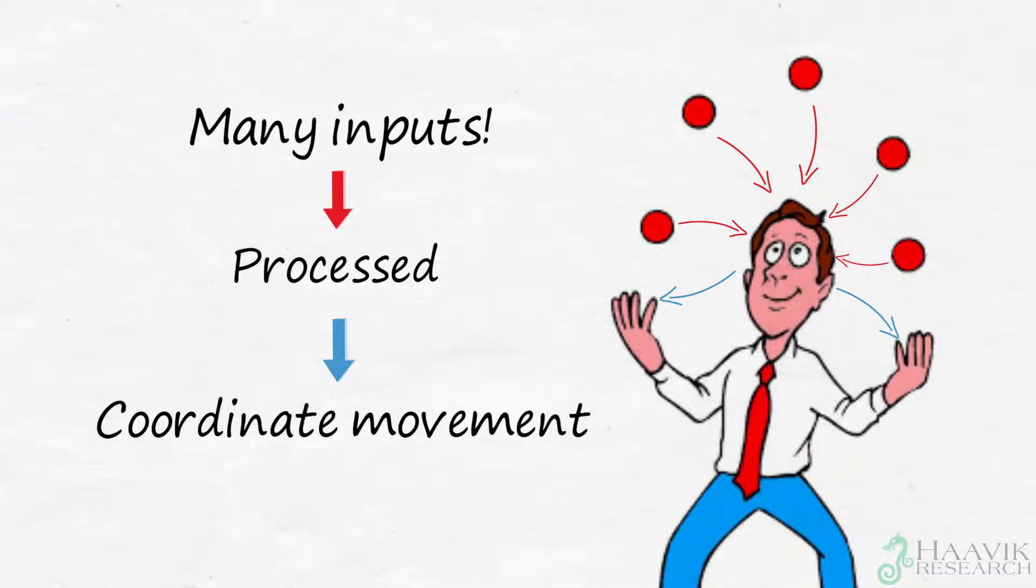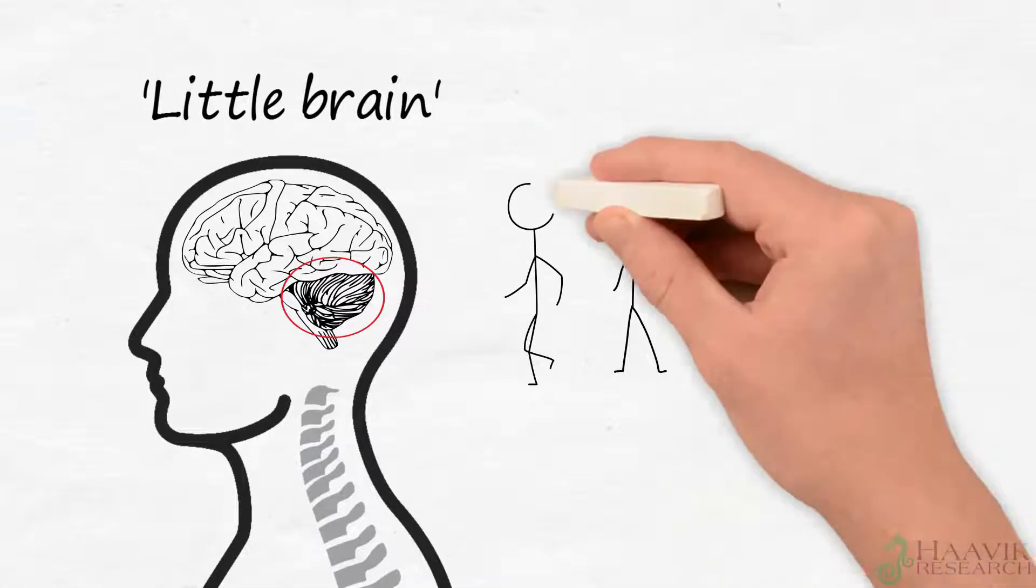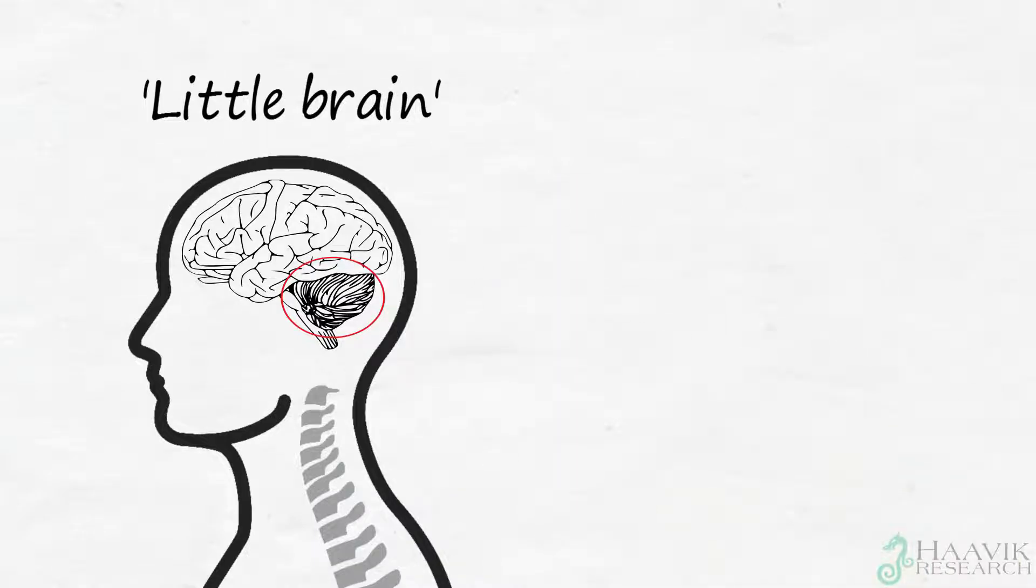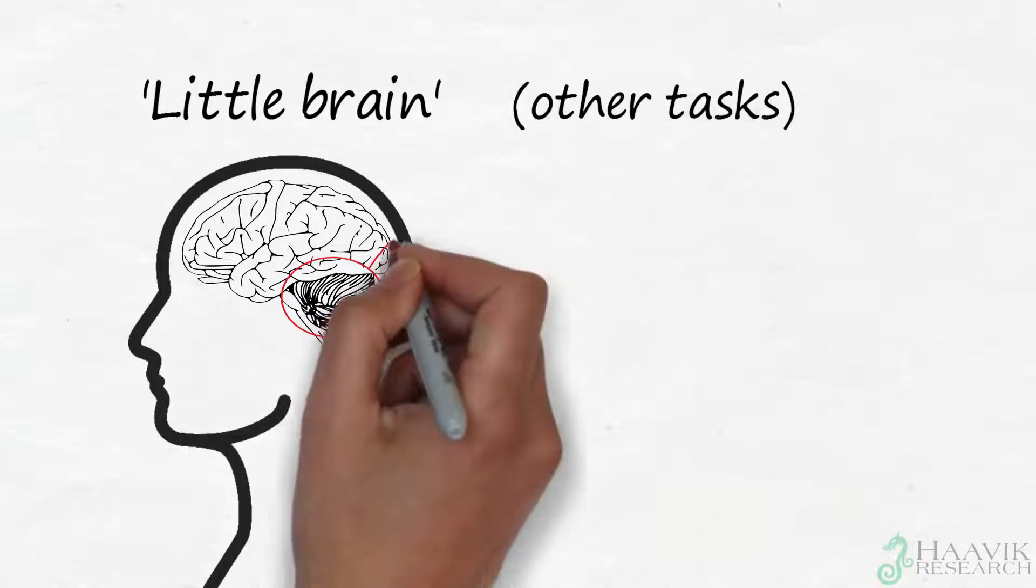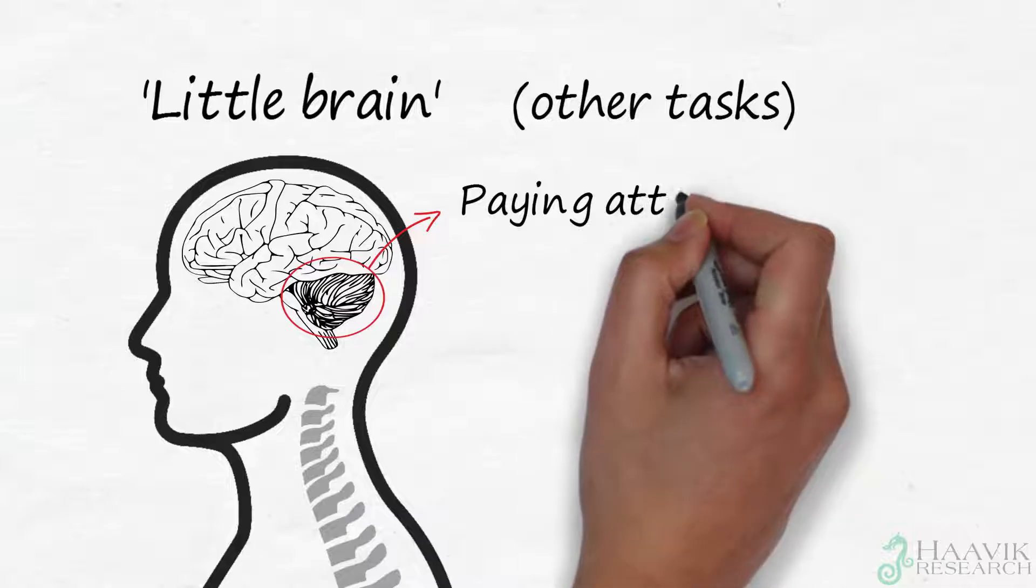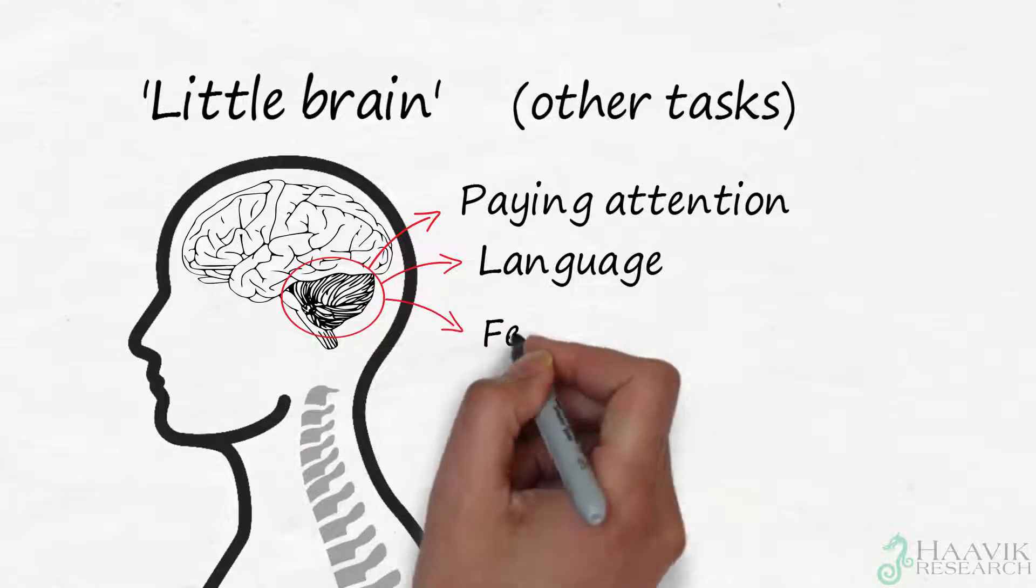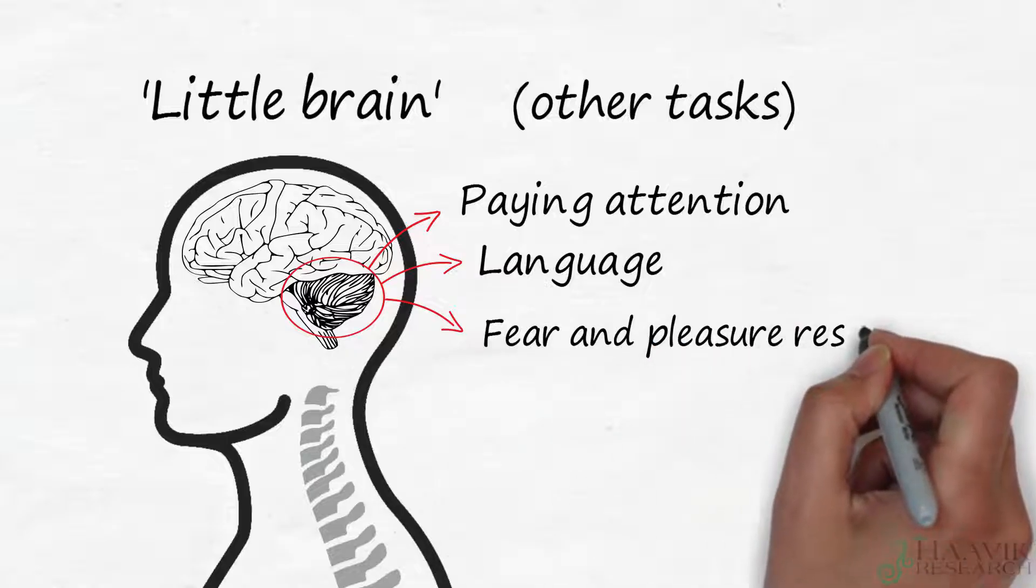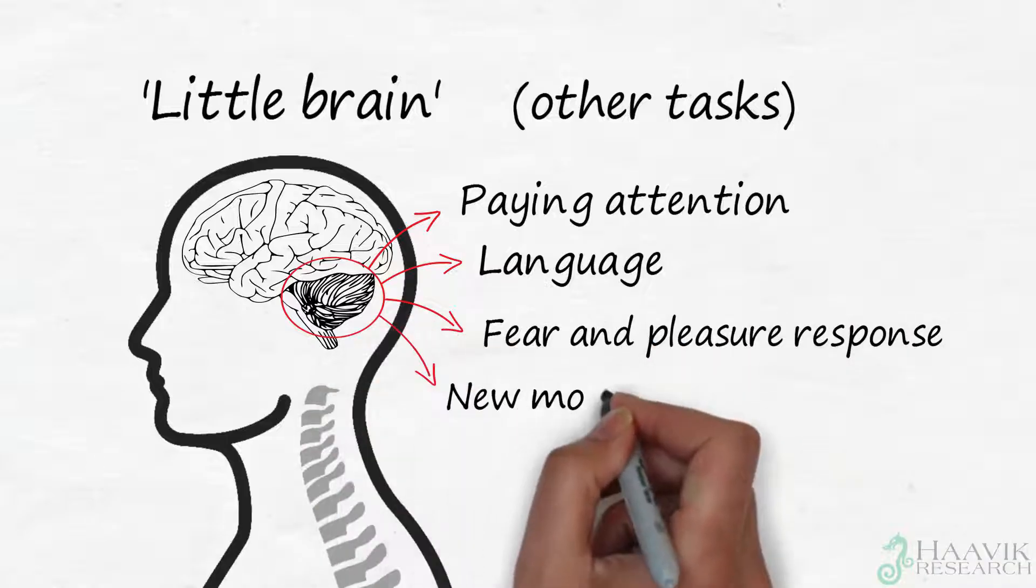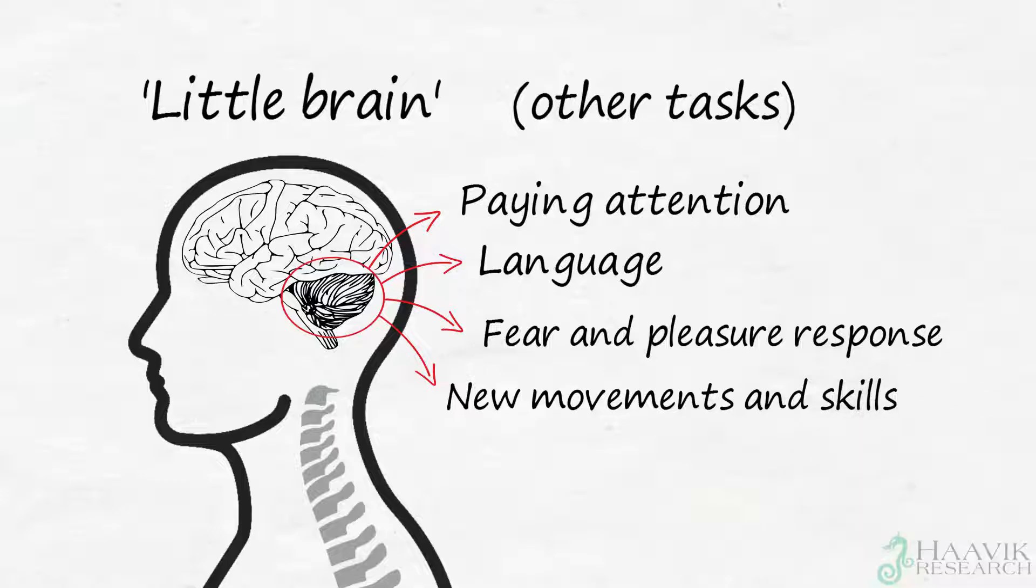The cerebellum is not just important for balance and accurate coordinated movements, but it is also important for other cognitive tasks, such as being able to pay attention to a task, or for language, as well as the way we relate to fear and pleasure responses. And we know that the cerebellum is very important for learning new movements and skills.